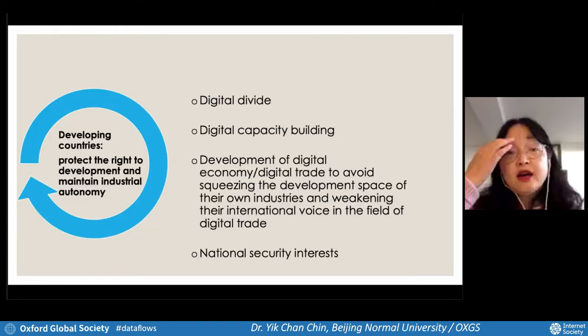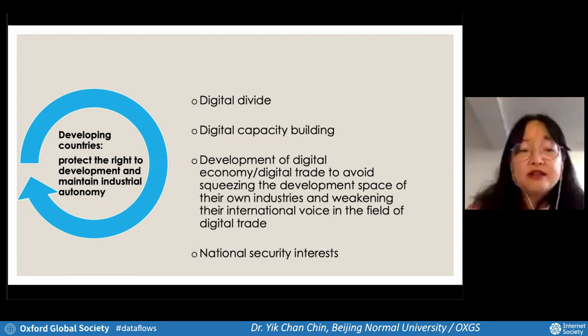Looking at a developing country like India, they have different demands and needs. They want to protect the right to development and maintain industry autonomy because, unlike the US and China, they are more lacking in digital capacity and there is a digital divide. They also have national security interests. So for them, they're more concerned about the right to development and maintaining industry autonomy. That's the key difference between those regions and countries.